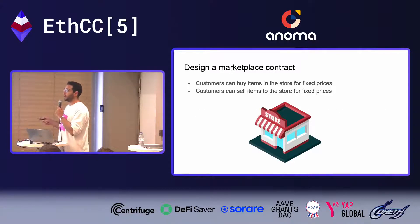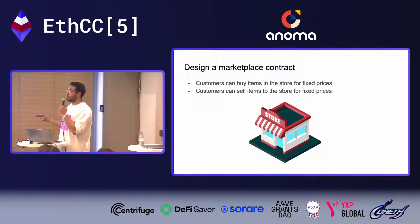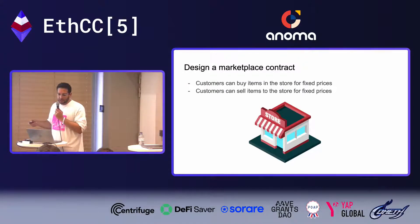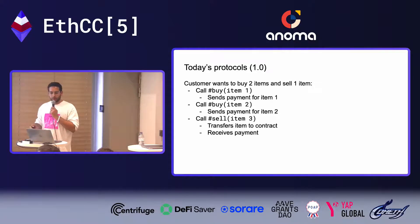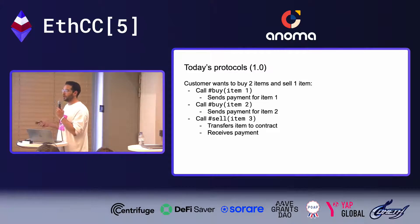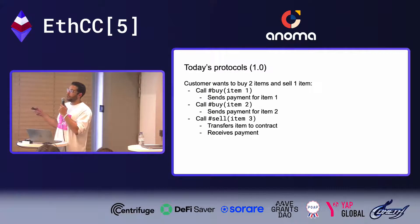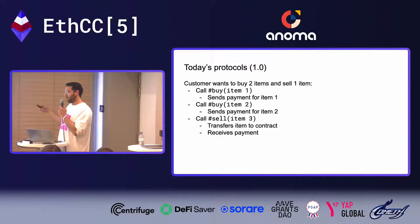Let's say we're designing a marketplace contract where customers can buy and sell items at fixed prices — something like Seaport but with fixed prices on every NFT. Version one might have a 'buy' function and a 'sell' function. When you call buy, you receive the item and send payment; when you call sell, you transfer the item and receive payment.